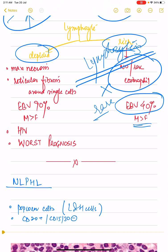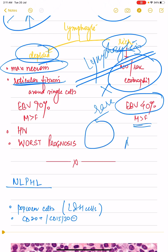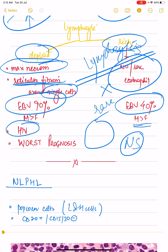In the lymphocyte depleted variant, as the name suggests, lymphocytes are not seen. There is a paucity of cells; instead, what you will see is the maximum necrosis of all the histological subtypes. There will be reticular fibrosis, but it is around single cells, not a group of cells or a nodule — if the fibrosis were around a group of nodules it would become nodular sclerosis. It is maximally associated with EBV in 90% of cases, is also associated with HIV, and has the worst prognosis of all variants.